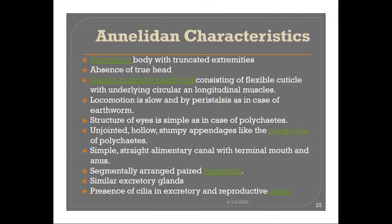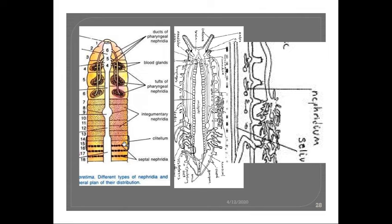The next annelidan feature is segmentally arranged paired nephridia. In the earthworm, we have learned about different types of nephridia — pharyngeal nephridia, integumentary nephridia present on the integument, and septal nephridia present between segments. A similar organization, even though not differentiated into three types, can also be found in Peripatus. The nephridia are not as regularly arranged as in the earthworm, but still show a comparable organization to that of the annelids.